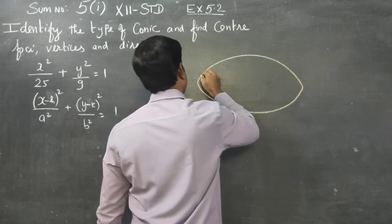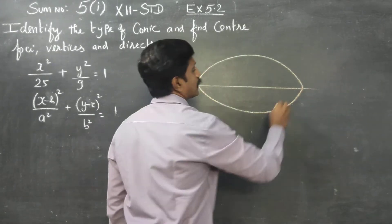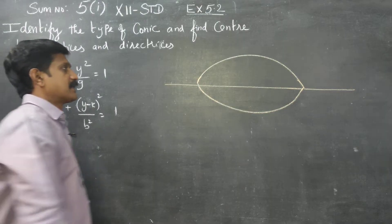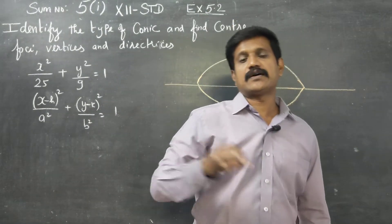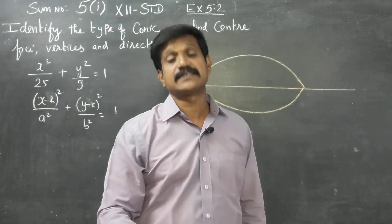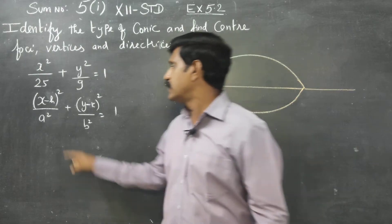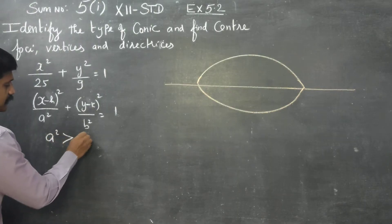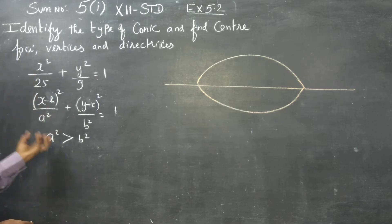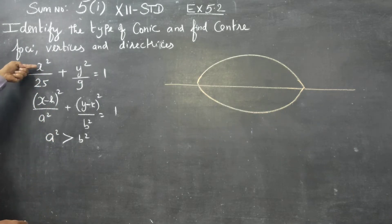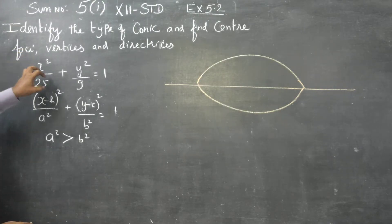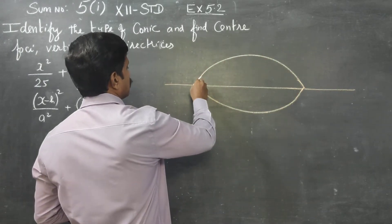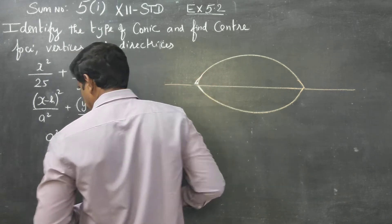To determine the type of ellipse: if a² is greater than b², the ellipse is horizontal. After completing this check, we can identify all the parts of the ellipse.